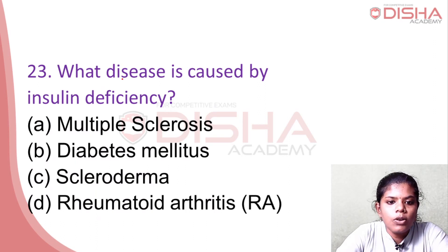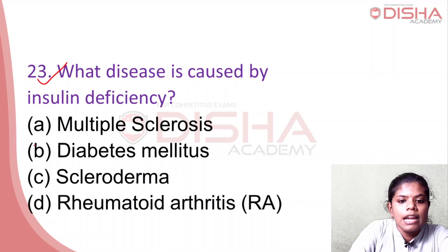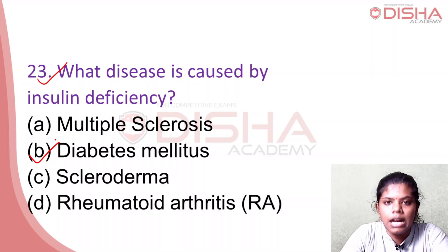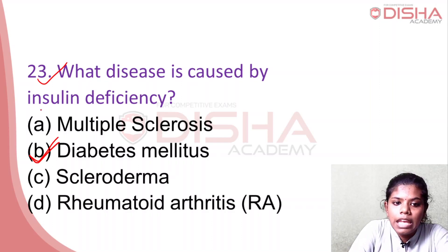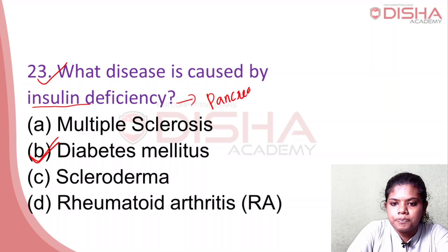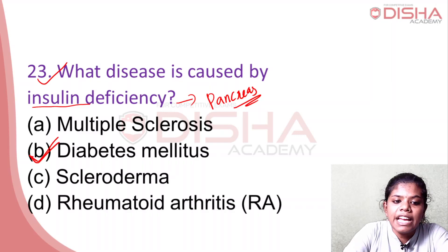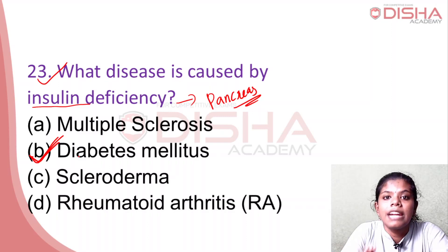What disease is caused by insulin deficiency? Insulin deficiency causes diabetes mellitus. In the body, if you can't produce insulin, glucose cannot be regulated. Insulin is a hormone produced by the pancreas, and its deficiency leads to diabetes mellitus.